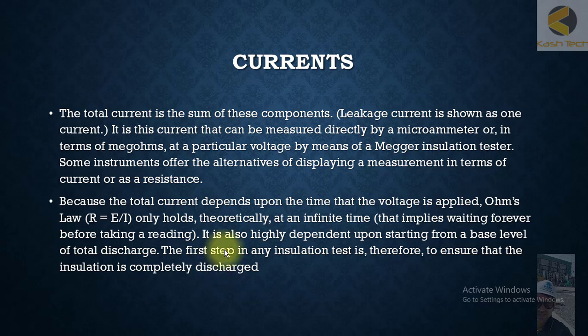These currents introduce some error, and there are techniques to avoid it. For example, we use a guard terminal to minimize the surface leakage current. We can also inject current into the cable for a longer time so that it can fully charge, and then take our reading. These are methods to bypass errors and obtain the correct reading.